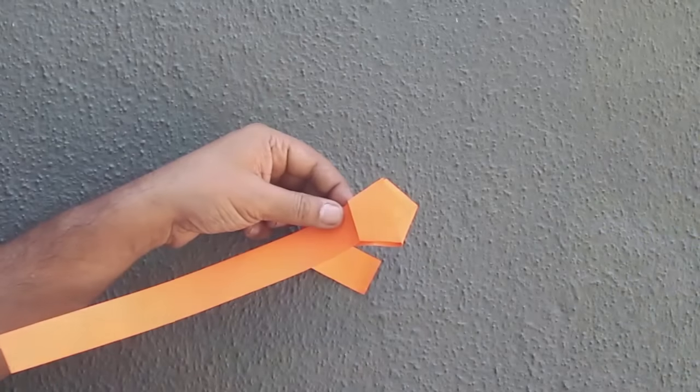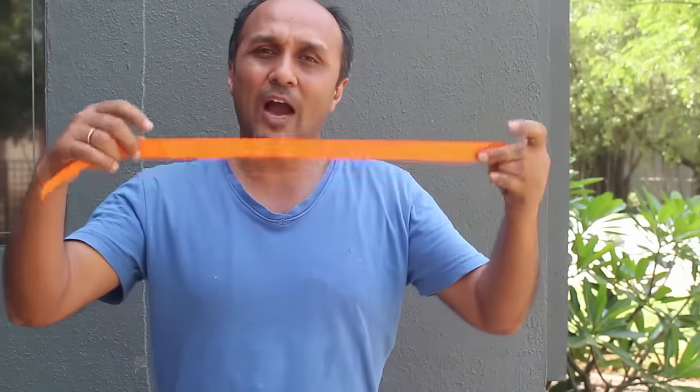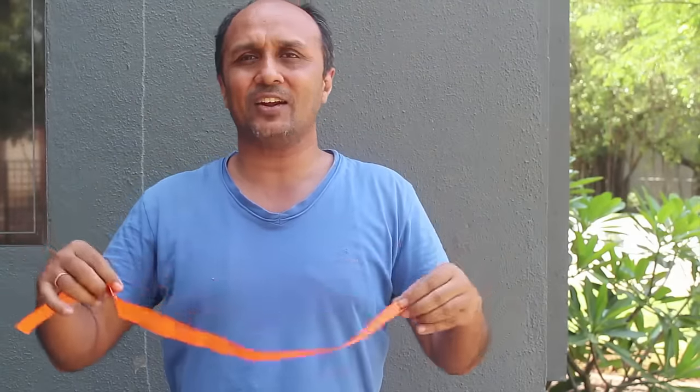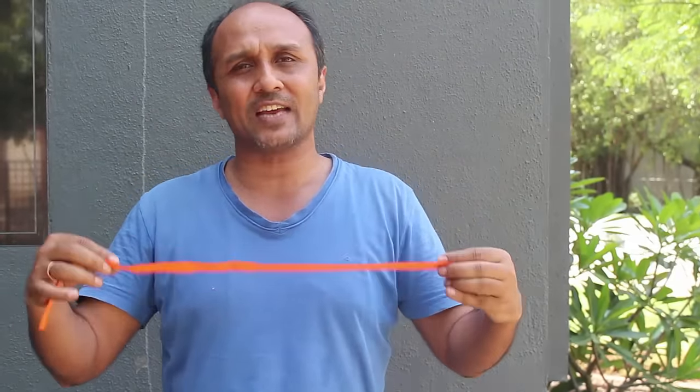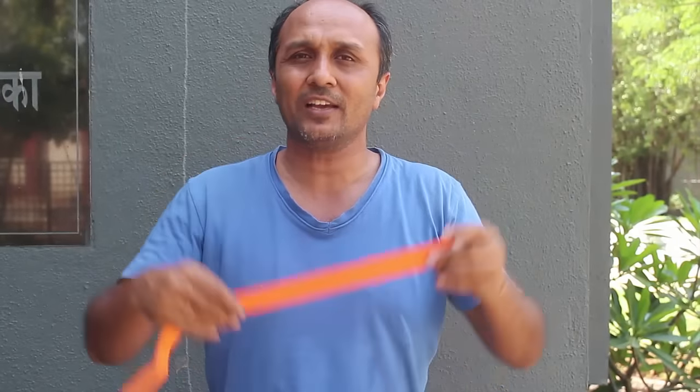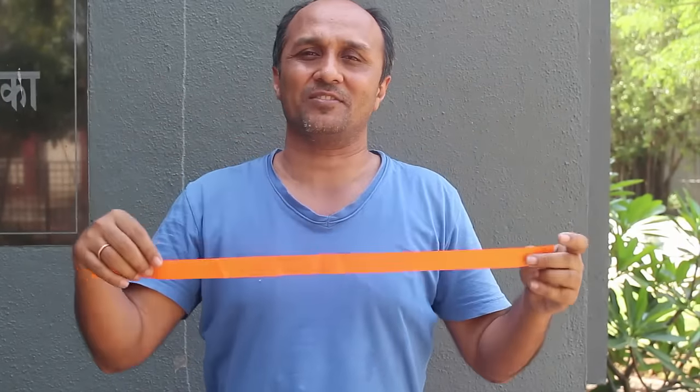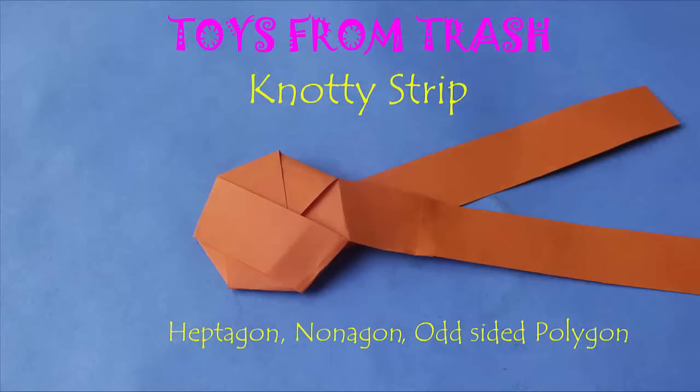We have seen how to make a pentagon with this simple strip of paper by just tying a knot. Now we are going to see how to make a seven-sided or nine-sided or eleven-sided, any odd-sided polygon with just this strip of paper, and we are also going to understand the math behind it.